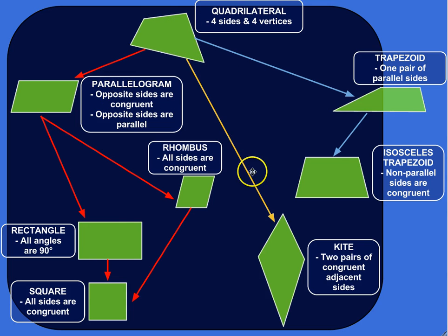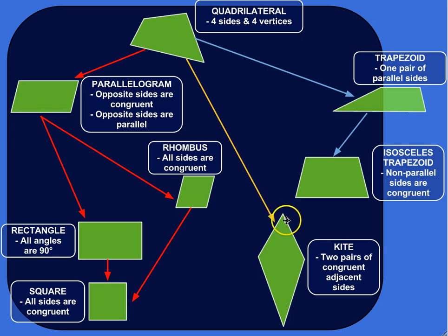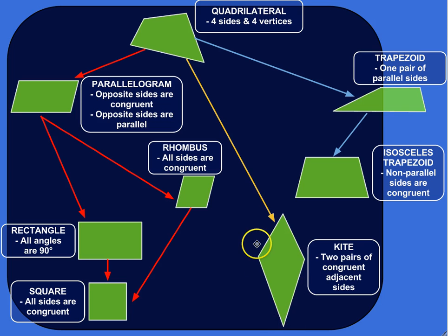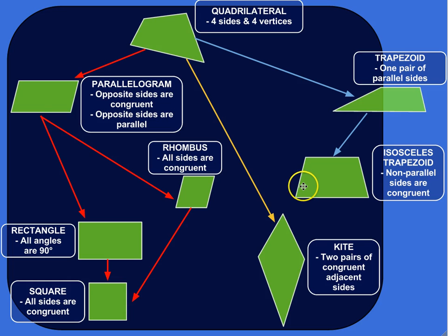Then we've got kites. Kites have two pairs of congruent adjacent sides. So this side and this side are congruent — they're the same length — and they're adjacent, meaning they're attached to each other. Here's one pair of congruent adjacent sides, and here's the other pair. It's called the kite for obvious reasons — kites have the shape of a kite, and vice versa.